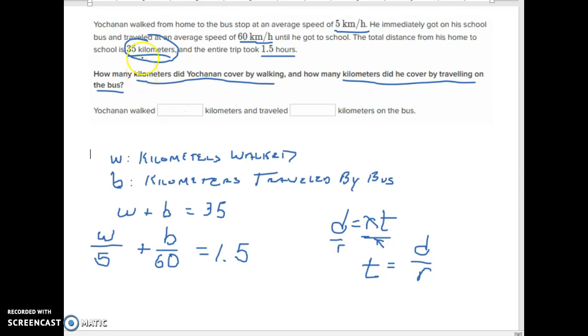I'm going to go ahead and multiply this whole equation by 60. So I'm going to multiply W over 5 by 60, plus B over 60 times 60, and 1.5 times 60. And what you're going to find...